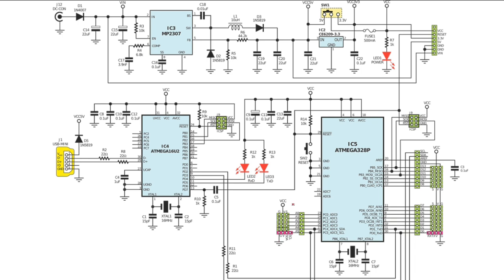IC5 also has a crystal oscillator at 16 megahertz with two identical capacitors, the same as those used with IC4. To summarize, this schematic contains diodes, capacitors, resistors, a coil filter, switches, LEDs, crystal oscillators, and connectors — all making up this complete circuit board design.